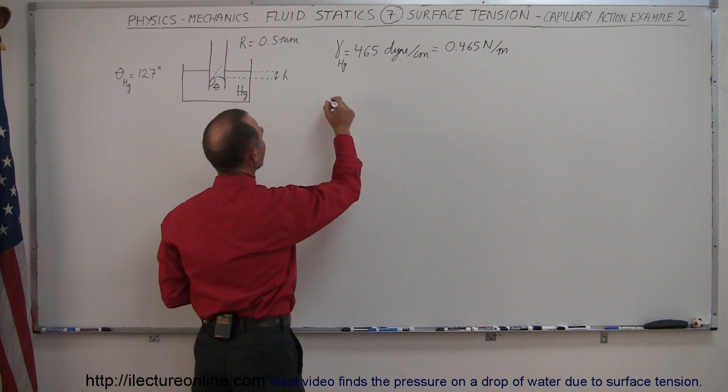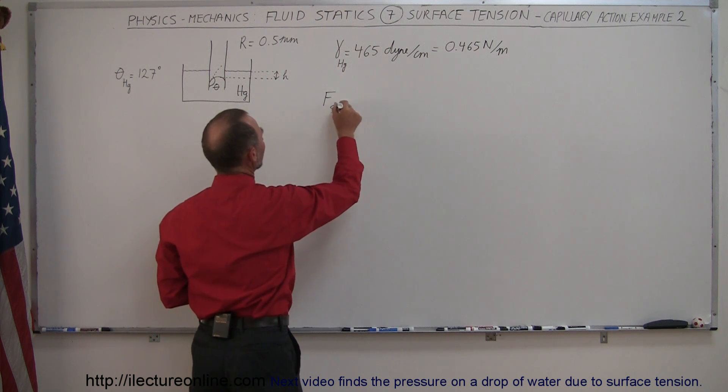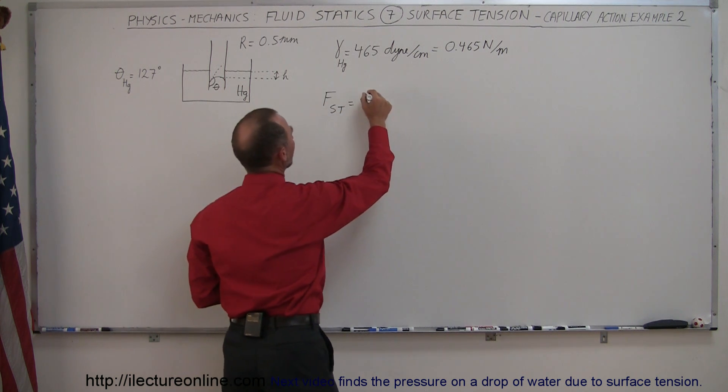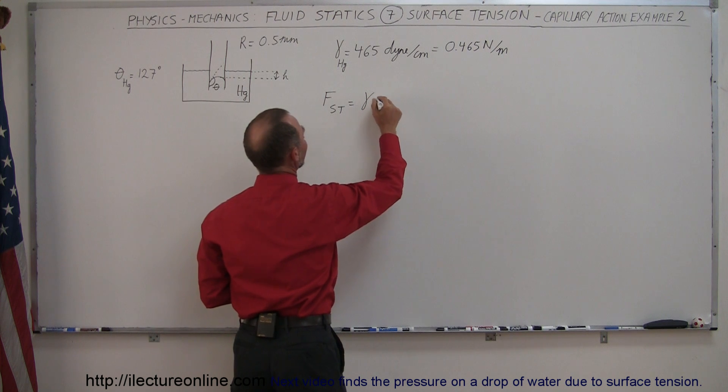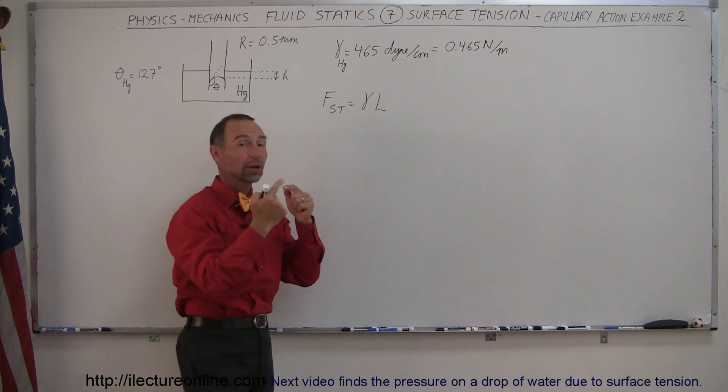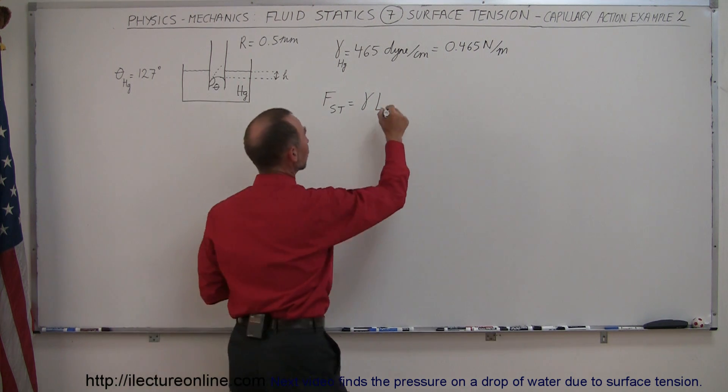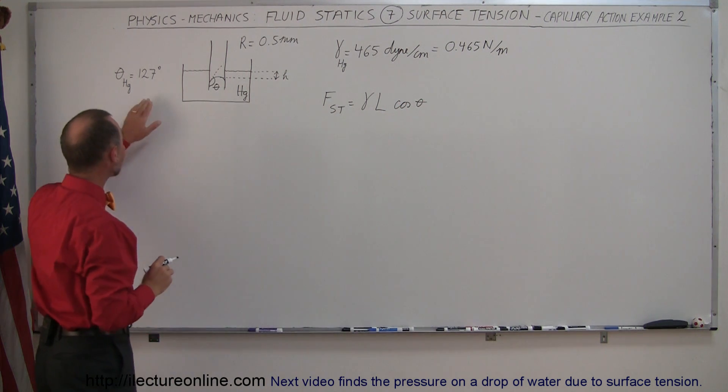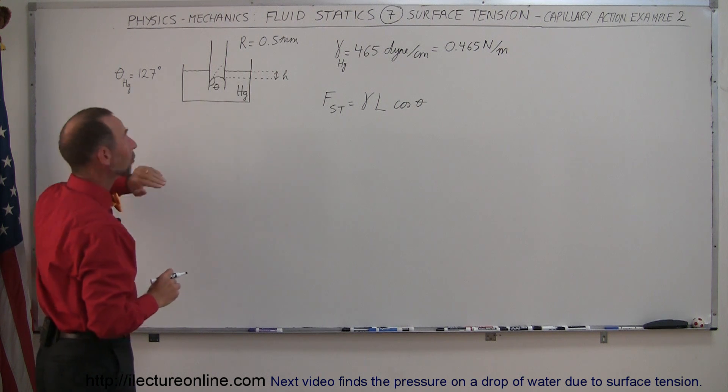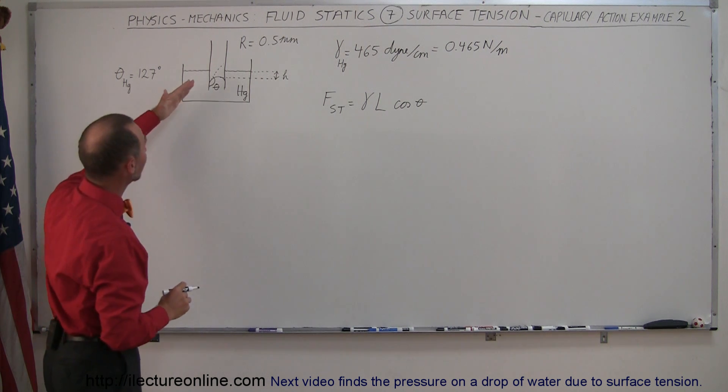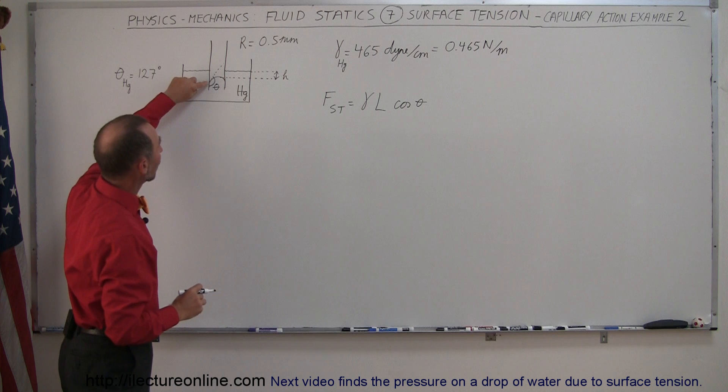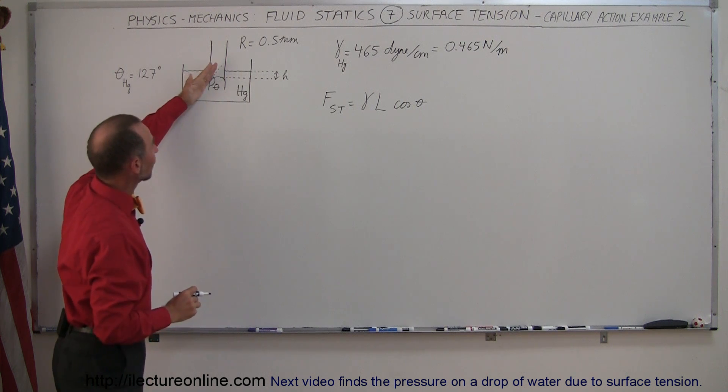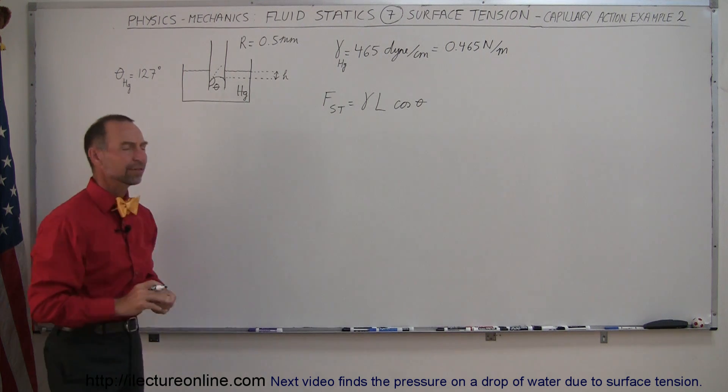So first of all, we can say that the force due to surface tension is equal to the coefficient of surface tension times the length along which this surface tension acts times the cosine of the contact angle between mercury and glass. And it turns out in this case, it's not zero, it's 127 degrees. And that's counted from where the mercury meets the glass, that angle right there all the way down to the bottom angle right here with the glass. So it's 127 degrees.